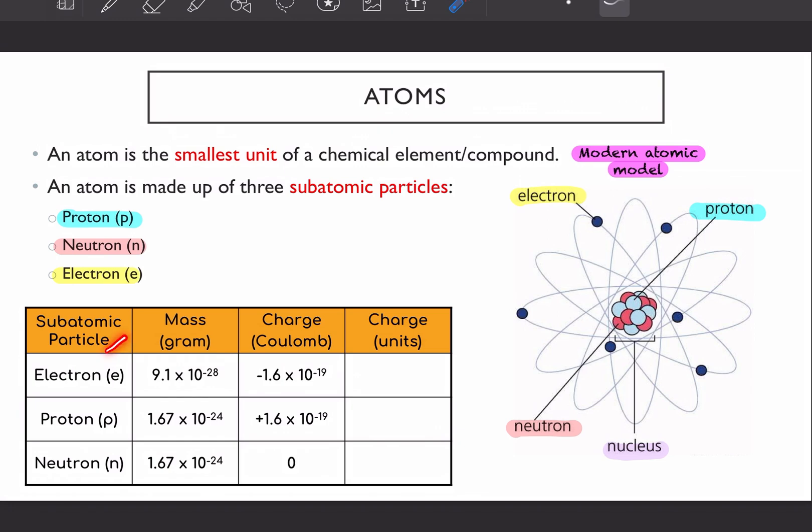Your subatomic particles, they have their own mass. So for electron, the mass is 9.1 times 10 to the negative 28. For proton, it is 1.67 times 10 negative 24, similar to neutron as well. So if you compare the mass of your electron with proton and neutron, your electron is much more lighter, sangat-sangat ringan.